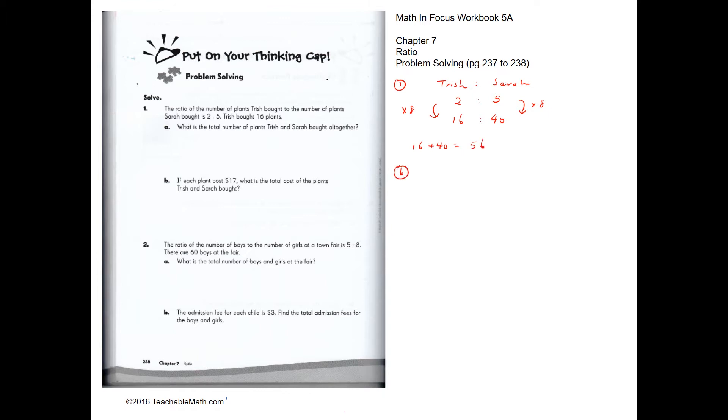For part B, if each plant costs $17, the total cost would be 56 times 17.